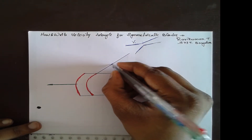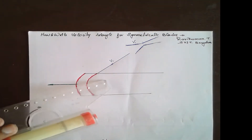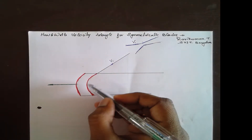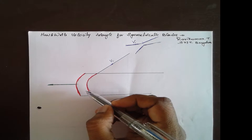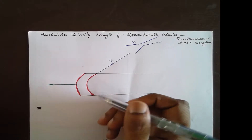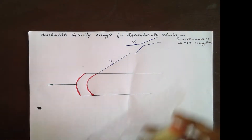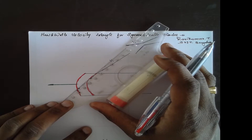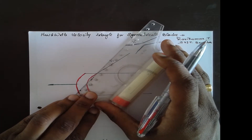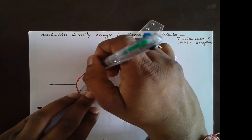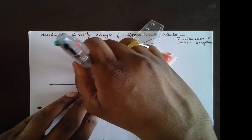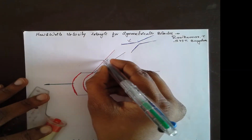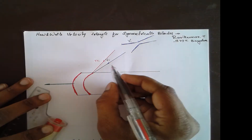Next, vr1 — please always remember — is always tangent to the blade profile, or blade periphery. So we take the tangent to the blade periphery like this. This gives us vr1.